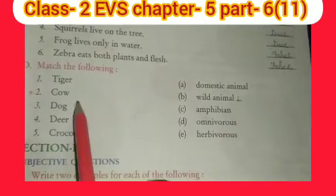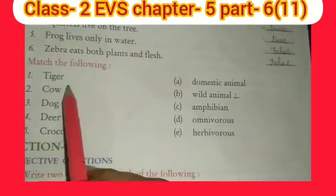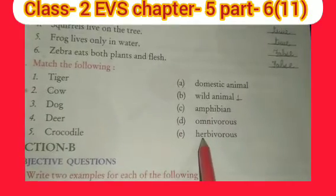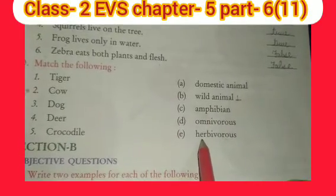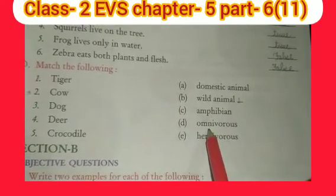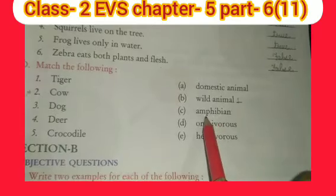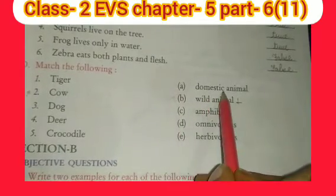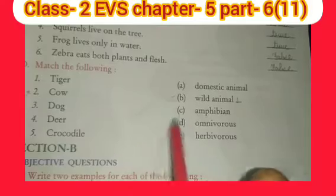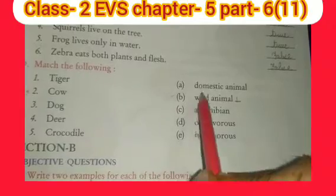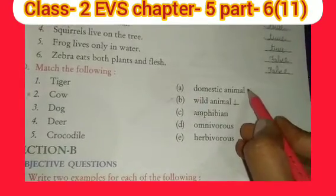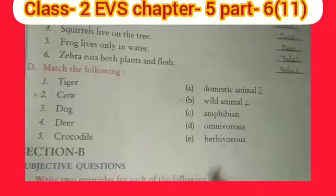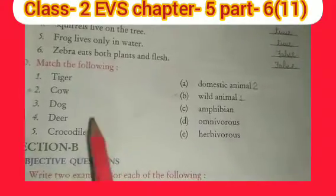Now second comes: cow. Cow — 'gaay' — everyone knows gaay. What is it from these options: herbivorous, omnivorous, or amphibian? We keep gaay at home, so gaay will be our domestic animal.